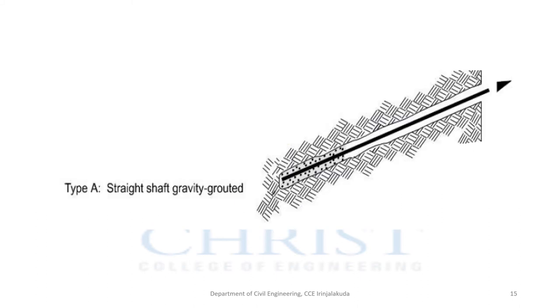Here is a picture of a straight shaft gravity grouted anchor. You can see there is a bonded part and an unbounded part in this picture.